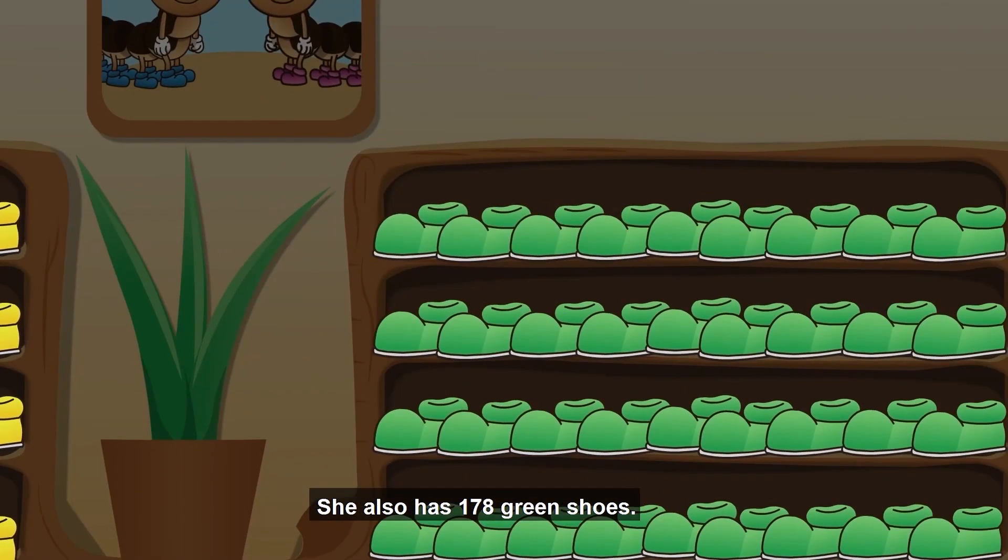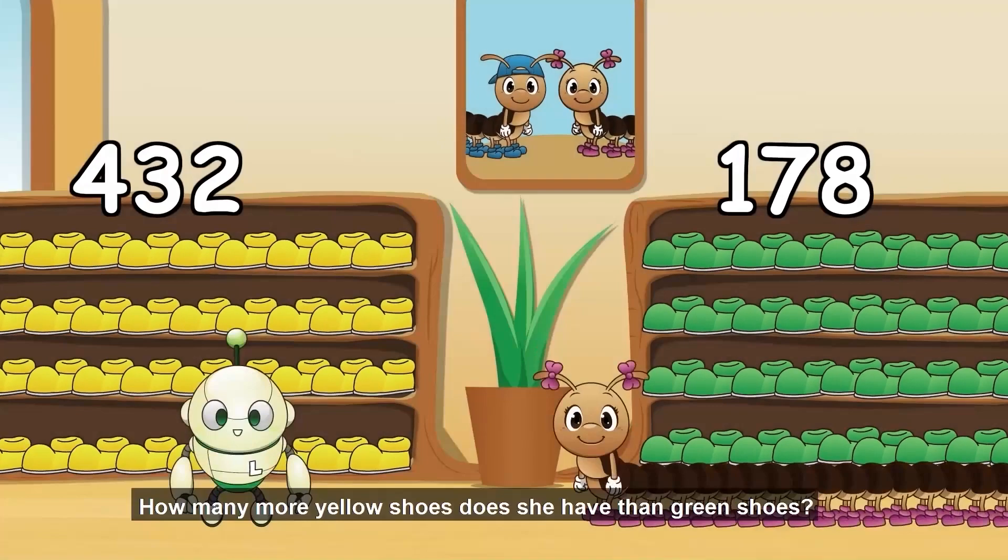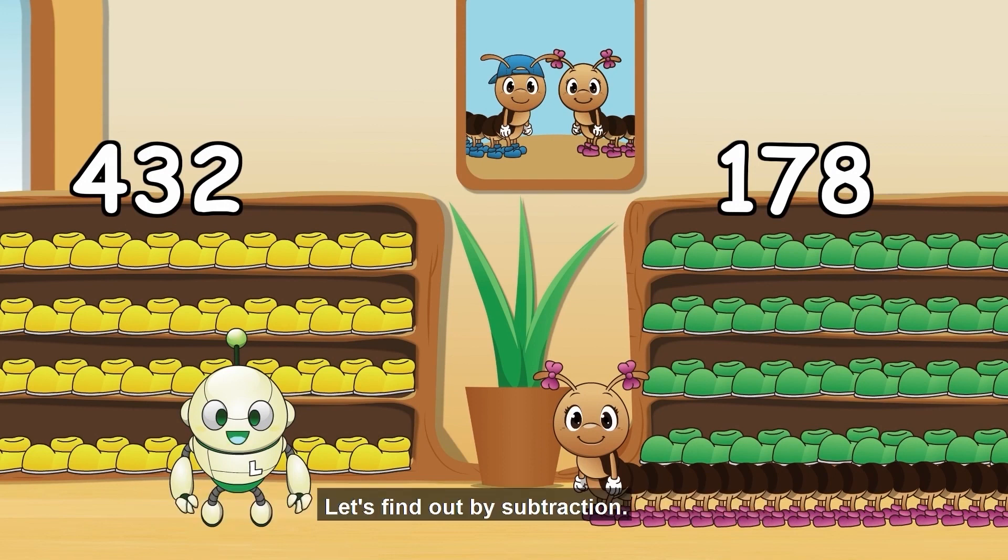She also has 178 green shoes. How many more yellow shoes does she have than green shoes? Let's find out by subtraction.